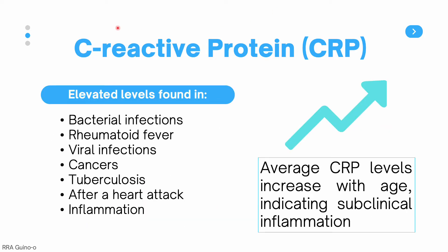Conditions that cause elevated CRP levels include bacterial infections, rheumatic fever, and viral infections. Cancers or malignancies also cause an increase in CRP levels. Chronic infections like tuberculosis and tissue damage such as after a heart attack can also elevate CRP. Inflammation increases CRP as well. In fact, average CRP levels are known to increase with age, indicating subclinical inflammation — meaning humans normally develop low-level inflammation as they age without necessarily exhibiting any signs or symptoms.